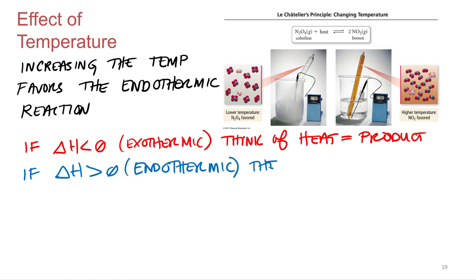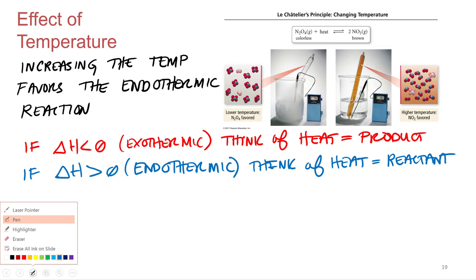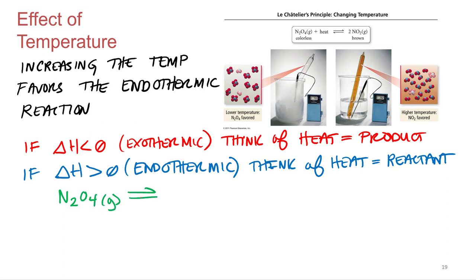If delta H is positive, that's endothermic, and we're going to think of heat as a reactant. These are just tricks to help us figure out which way the equilibrium is going to shift — heat really isn't a reactant or product — but this allows us to use the same logic we use for concentration changes to figure out where the equilibrium is going to shift and ultimately determine what concentrations are going to go up or down.